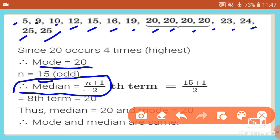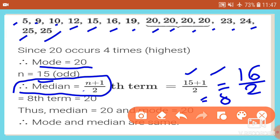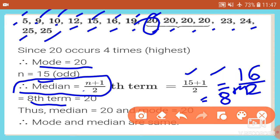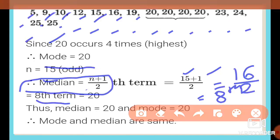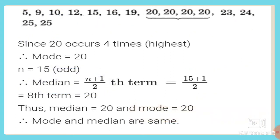So n = 15. Using the formula: (15+1)/2 = 16/2 = 8. We look at the 8th term in the ascending order. The 8th number is 20, so median = 20. Both mode and median are 20 — they are the same.